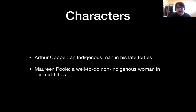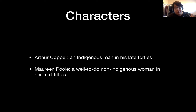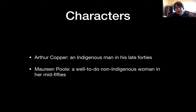When you're looking at this play, it has two characters — only two characters. Arthur Copper, who is an Indigenous man in his late 40s, and Maureen Poole, a well-to-do non-Indigenous woman in her mid-50s. Those are the only two characters; no other characters actually appear in order to talk. It's just these two.